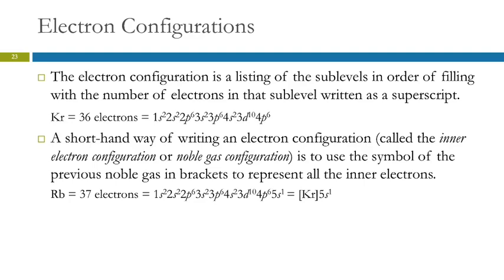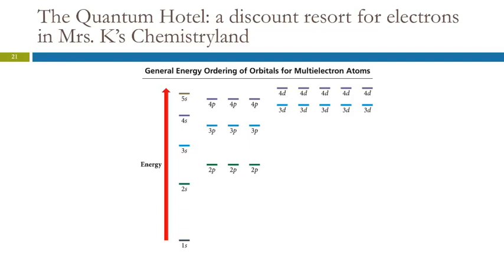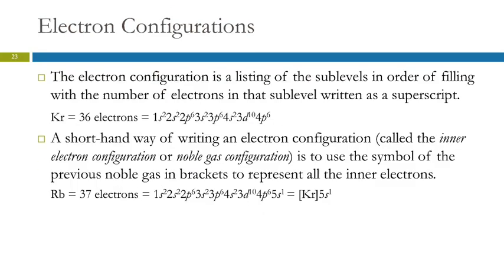Krypton has 36 electrons, and if we fill 36 electrons into the energy-level diagram we end up full through 4p, with six electrons in 4p. Now, that notation can get tedious for bigger atoms. So there's a shorthand called the inner electron configuration or noble gas configuration. For rubidium, which has 37 electrons, the part of its configuration up through 4p6 is identical to krypton's. So instead of writing all of that out, we write krypton in brackets — [Kr] — and then just add 5s1.